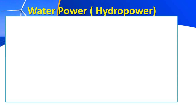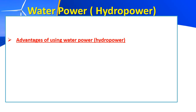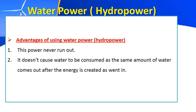Water power — to just remind you — we also called it hydro power. What's the advantage of water power or hydro power? Number one, this power never runs out; it will not end because water is a natural thing — it's renewable. Number two, it doesn't cause water to be consumed, because the same amount of water stays after the energy is created. And number three, it doesn't pollute the water; the water is not polluted during this process.